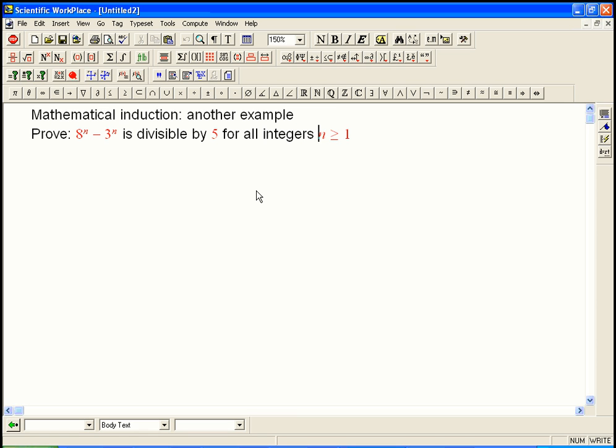Usually when we say n, it's understood as an integer. So let's just lay this out as a typical example of induction. The base case is going to be n = 1, and we just check it. Usually that's very simple. You just have to remember to do it. Oh, that is equal to 5, which is definitely divisible by 5.